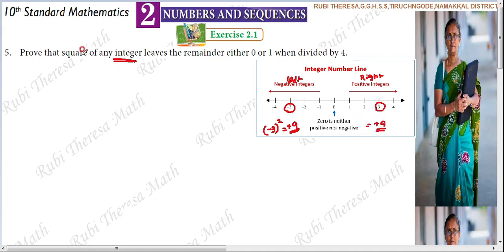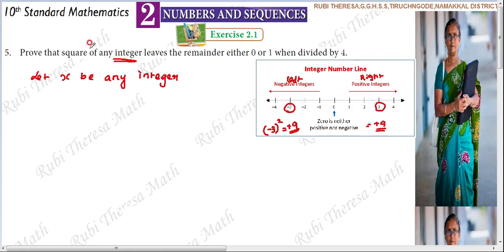So we need to give the square of any integer in general. We don't need to specifically mention positive or negative integer because when you square it, they both come out the same way. Let x be any integer. Also, both odd numbers and even numbers will come — odd integers and even integers will be there.